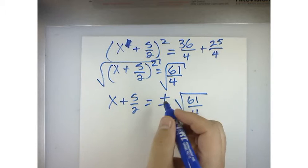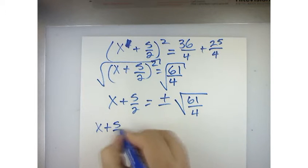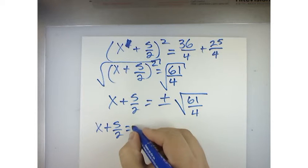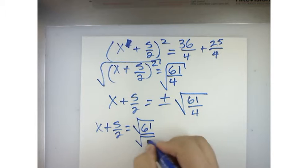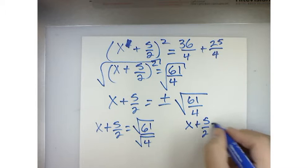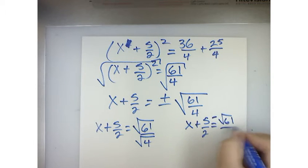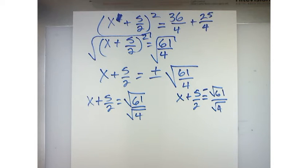Now what I'm going to do is say x plus 5 over 2 equals the square root of 61 over the square root of 4 or x plus 5 over 2 equals negative square root of 61 over the square root of 4. Now, remember, that's the property of square roots. I could do that.